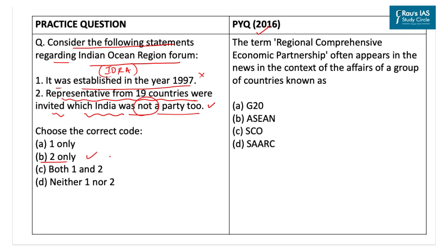Regarding the Indian Ocean Rim Association (IORA), it was established in 1997 and has 23 member states along with 9 dialogue partners. The China Indian Ocean Region Forum was organized by the China International Development Cooperation Agency. The correct answer for the previous year question is option B.